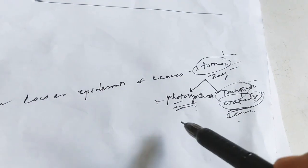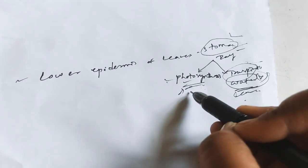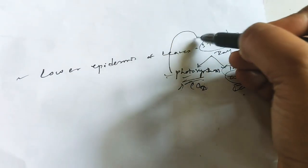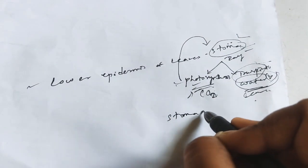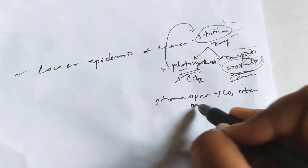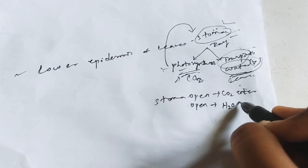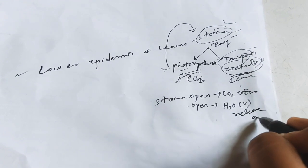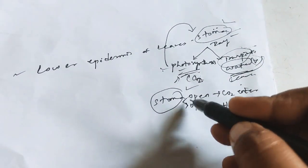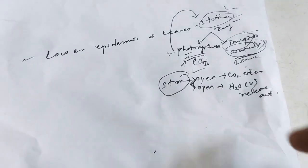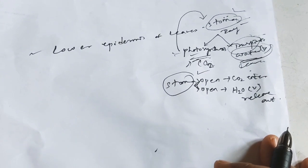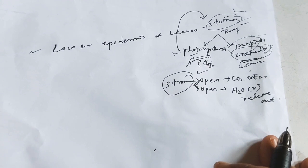In case of photosynthesis, there is synthesis of food, which requires CO2. Due to the opening of stoma, CO2 easily enters the plant body. Also due to stoma being open, water in the form of vapor is released out. So stoma serve two functions. The number of stoma ranges from about 1000 to 10000 per centimeter square.